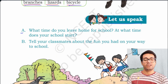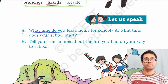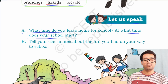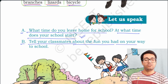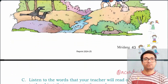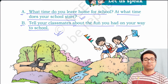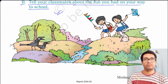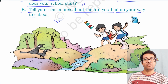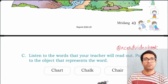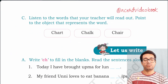Let us speak. A: What time do you leave home for school? At what time does your school start? You have to write the timing here. B: Tell your classmates about the fun you had on your way to school — whether on foot, on bicycle, on bus, or by auto-rickshaw. Write what things you enjoy.